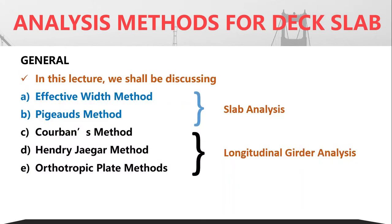In this lecture, we shall discuss only some of the methods. The effective width method and Pigott's method are used for slab bridges — they are for slab analysis. The Corbons method, Henry Yager's method, and orthotropic plate models are meant for girder analysis — where you have a beam-girder supporting the slab. We shall be discussing these methods in this lecture.